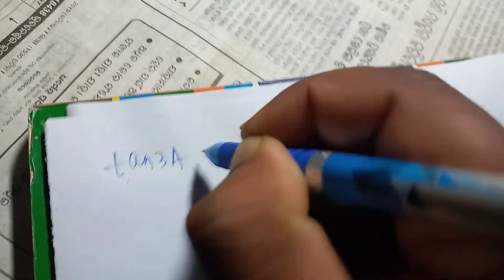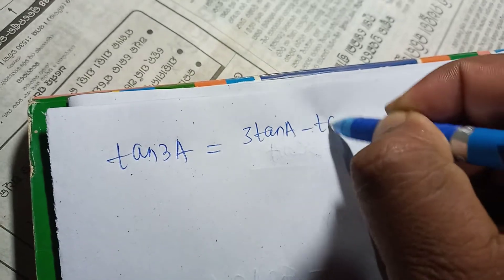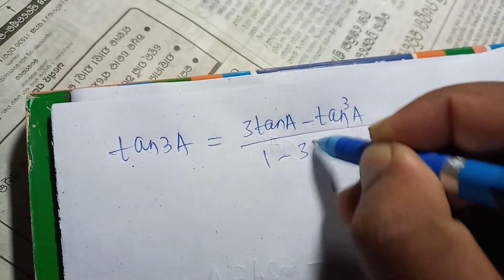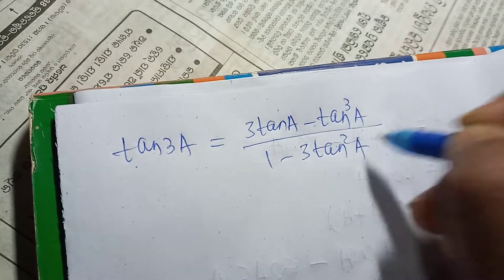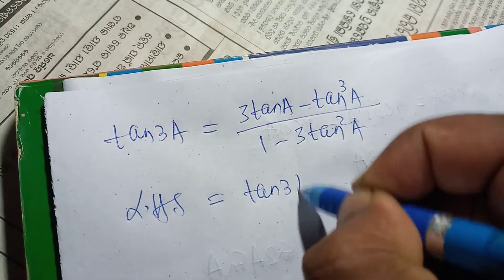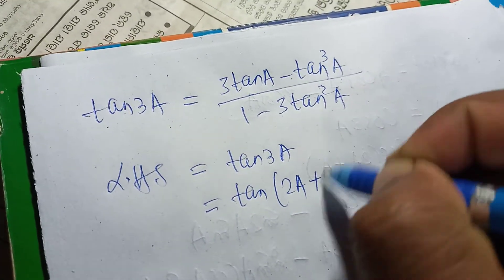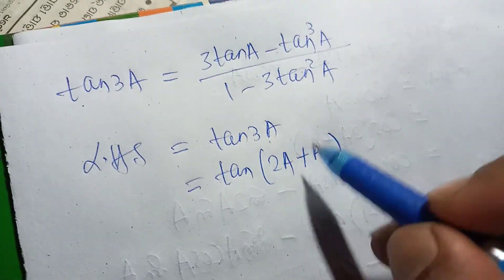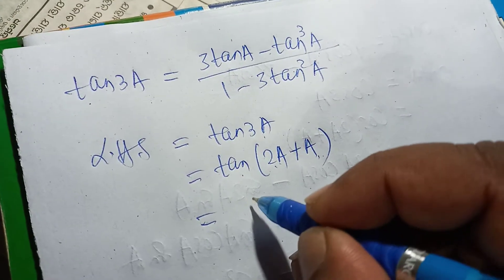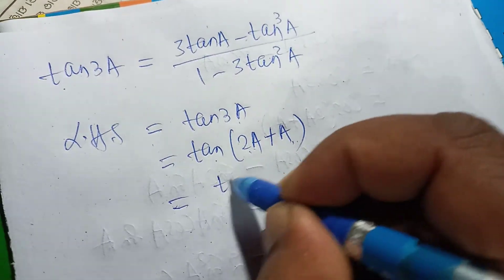We need to prove that tan 3a equals 3 tan a minus tan cube a, divided by 1 minus 3 tan square a. Starting with the LHS, tan 3a can be written as tan(2a + a), which is in the form tan(a + b). The formula is: tan a plus tan b, divided by 1 minus tan a into tan b.